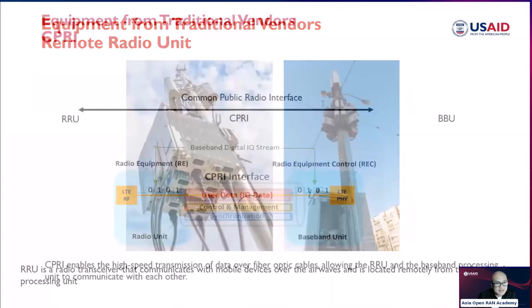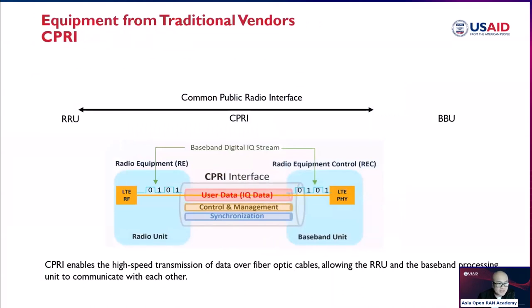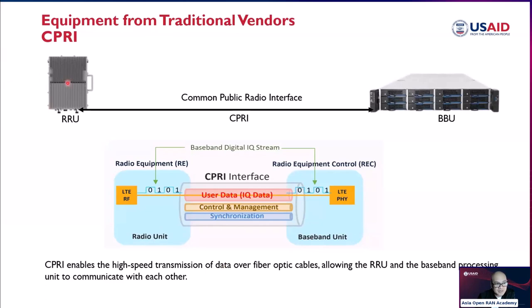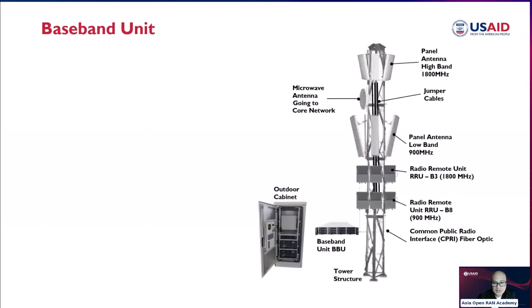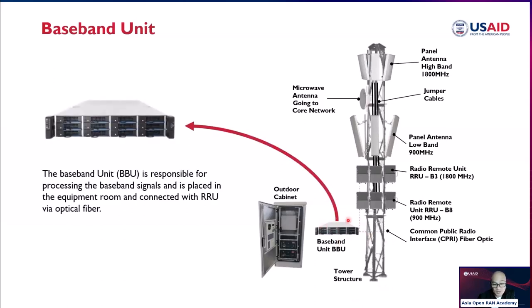The CPRI, or Common Public Radio Interface, enables high-speed transmission of data over fiber optic cable, allowing the RRU and BBU to communicate with each other. The BBU is typically located below the tower, responsible for processing baseband signals, placed in the equipment room and connected with the RRU via optical fiber. That's our first topic about introduction to radio access network.